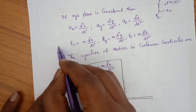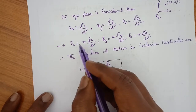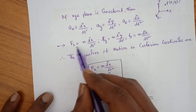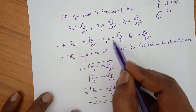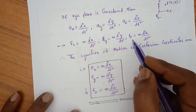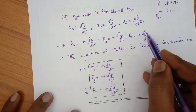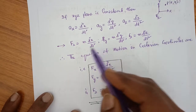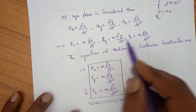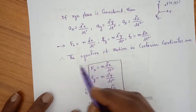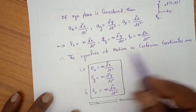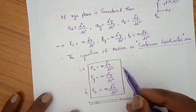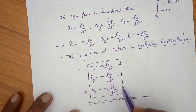The force acting on the particle is also in the X,Y,Z plane. So FX equals M times d²X/dt², FY equals M times d²Y/dt², and FZ equals M times d²Z/dt². These three force components along X, Y, and Z are known as the equations of motion in Cartesian coordinates.